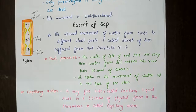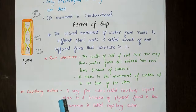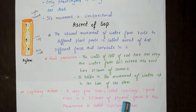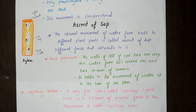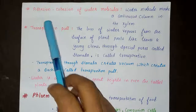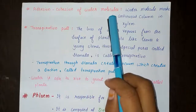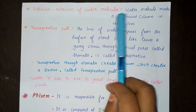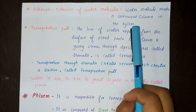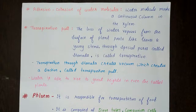The second force is capillary action. A very thin tube is called a capillary, and liquid rises in it because of physical forces — this phenomenon is called capillary action. The third force is adhesion and cohesion of water molecules. Water molecules form a continuous column inside the xylem, which helps push water upward through the plant body.